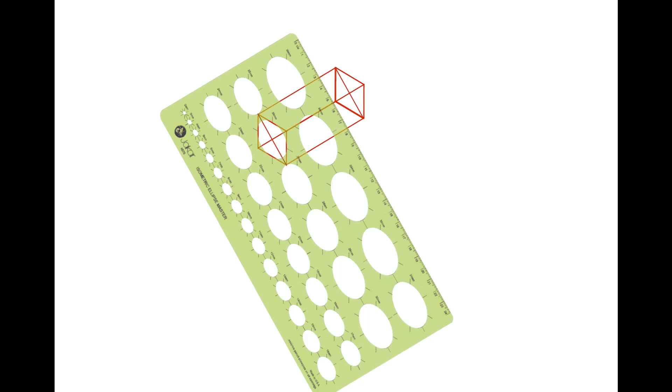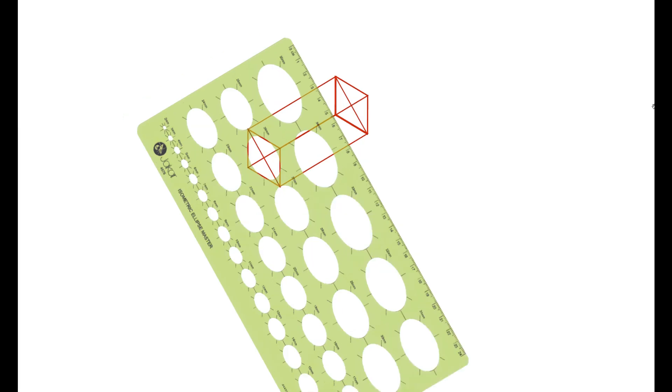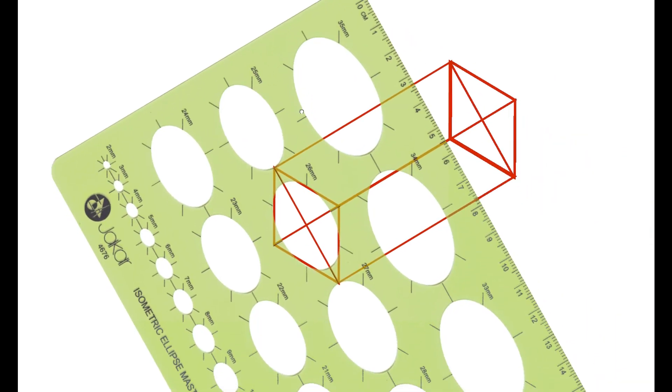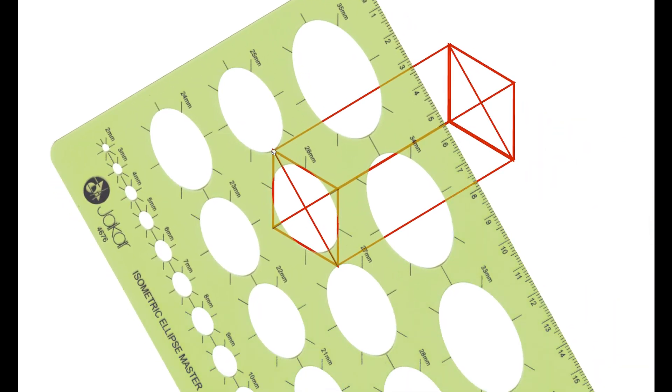is that you need to change the orientation of the template to match the orientation of the isometric square. This means aligning the corners.